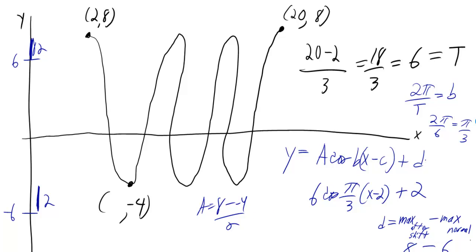And then the vertical shift—you can figure that out by matching up the max after the shift versus the max that you would normally have if you had an amplitude of 6.